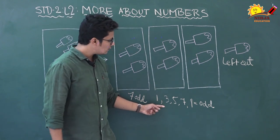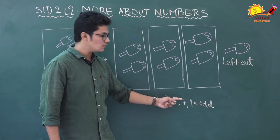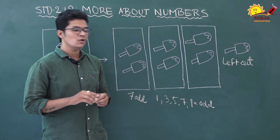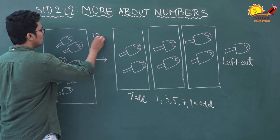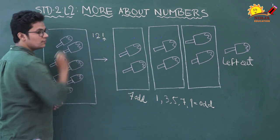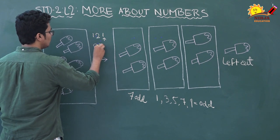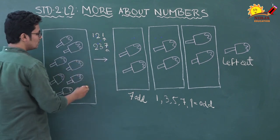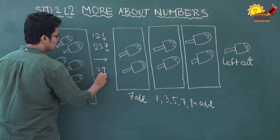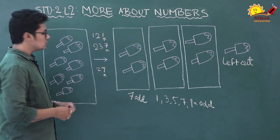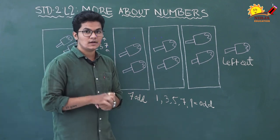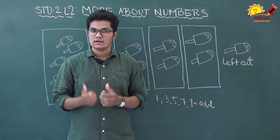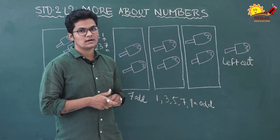If the ones place has one, three, five, seven, or nine, the number is odd. For example, twenty-one — ones place has one, so it is an odd number. Thirty-seven — ones place has seven, so it is an odd number. Twenty-nine — ones place has nine, so it is an odd number.